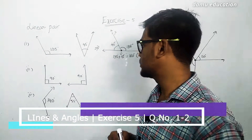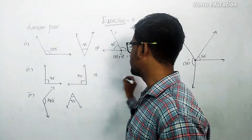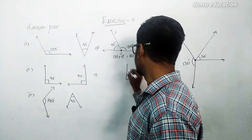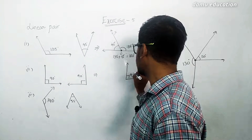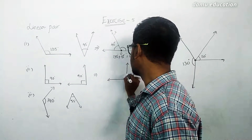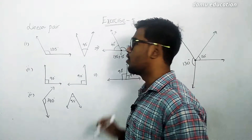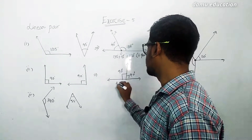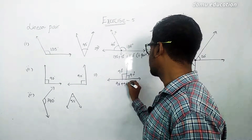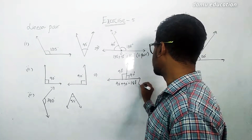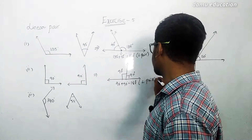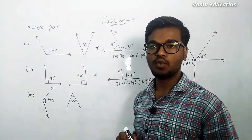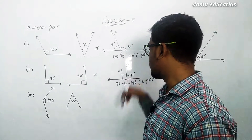The next question is 90 degrees and 90 degrees. Framing them: obviously 90 plus 90 equals 180 degrees, so this is also a linear pair angle. It is a linear pair because it has the same vertex O and the same arm OY.